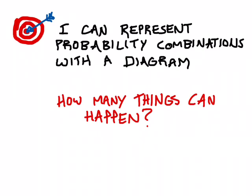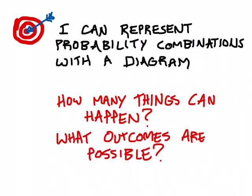That's going to be the basis of a lot of probabilities — if you know 15 things can happen, probably your probabilities are going to be based off of the number 15. A good diagram of combinations can also tell us what those things are exactly, what outcomes are possible, which is a really nice thing to know when we're trying to calculate probabilities.